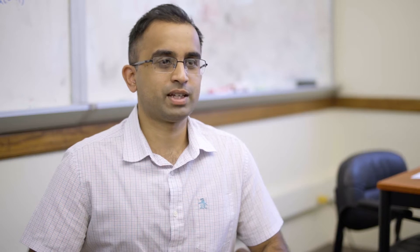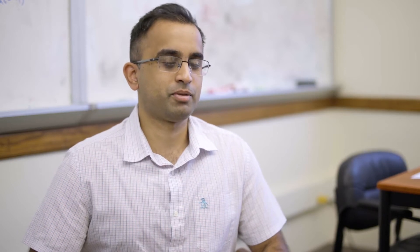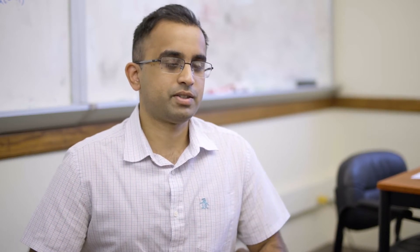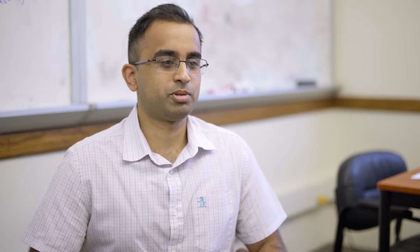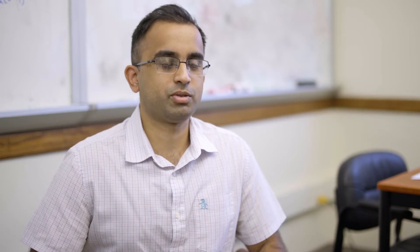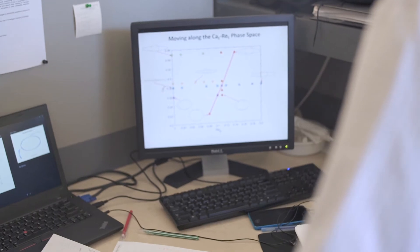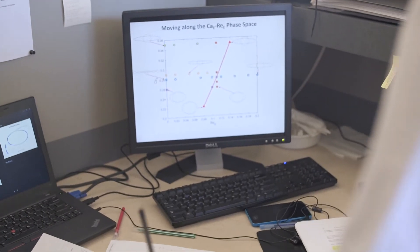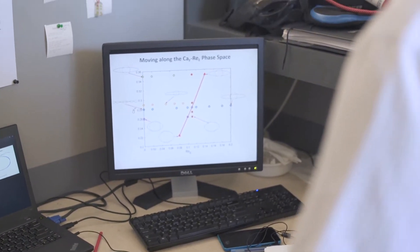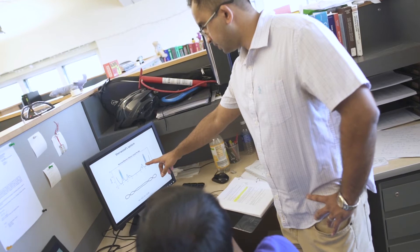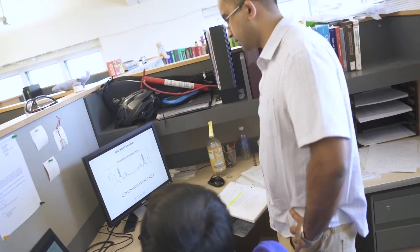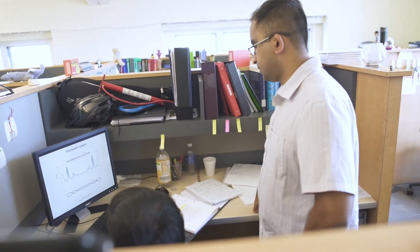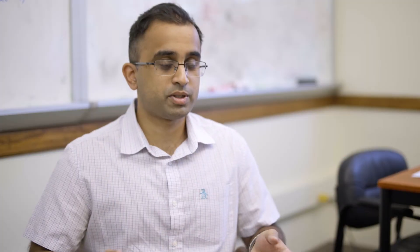I'd like to walk you through a couple of examples from my research group. The first has to do with so-called electrophoretic mobility reversal. Electrophoresis refers to the motion of charged micron-scale objects like biomolecules or colloids under an electric field. You would think if you had a negatively charged particle and applied an electric field, it would drift towards a positive electrode. In concentrated electrolytes, the opposite happens.